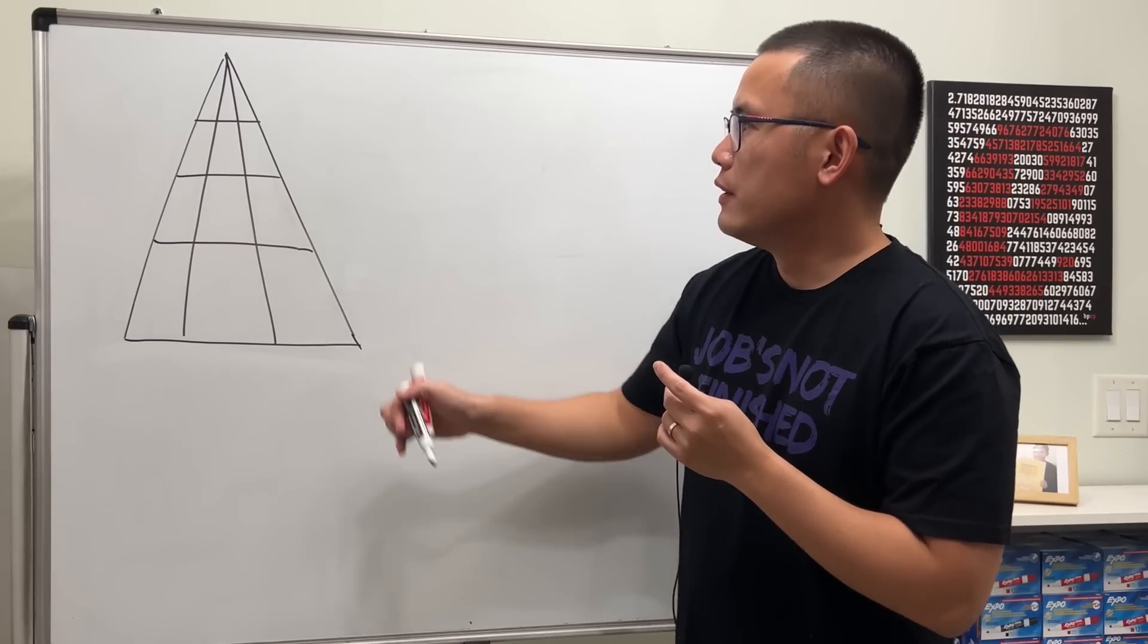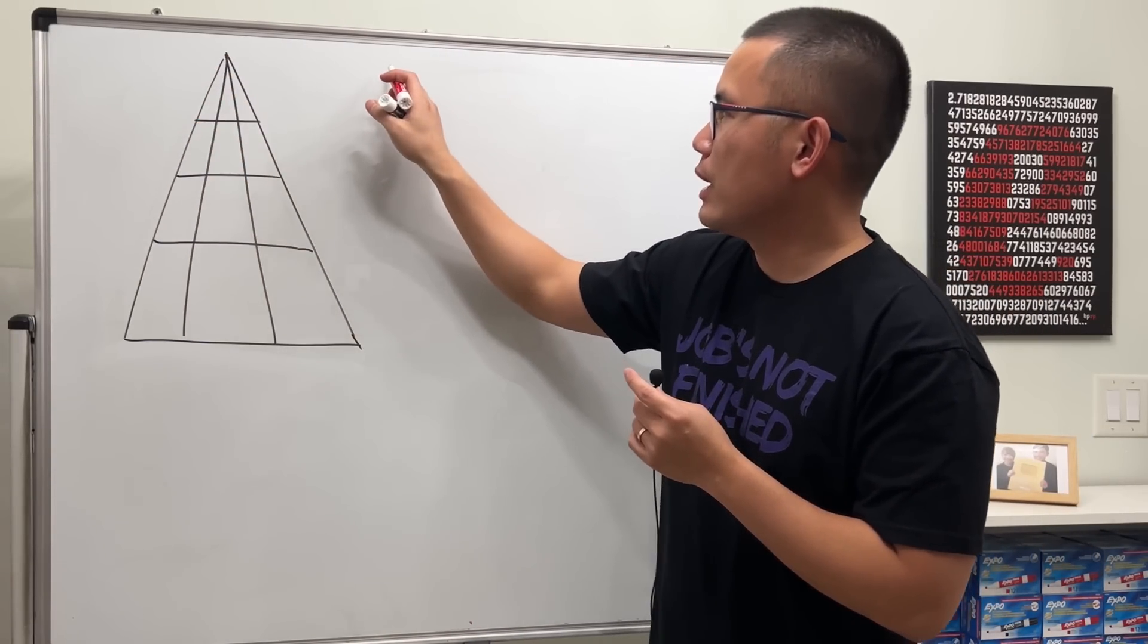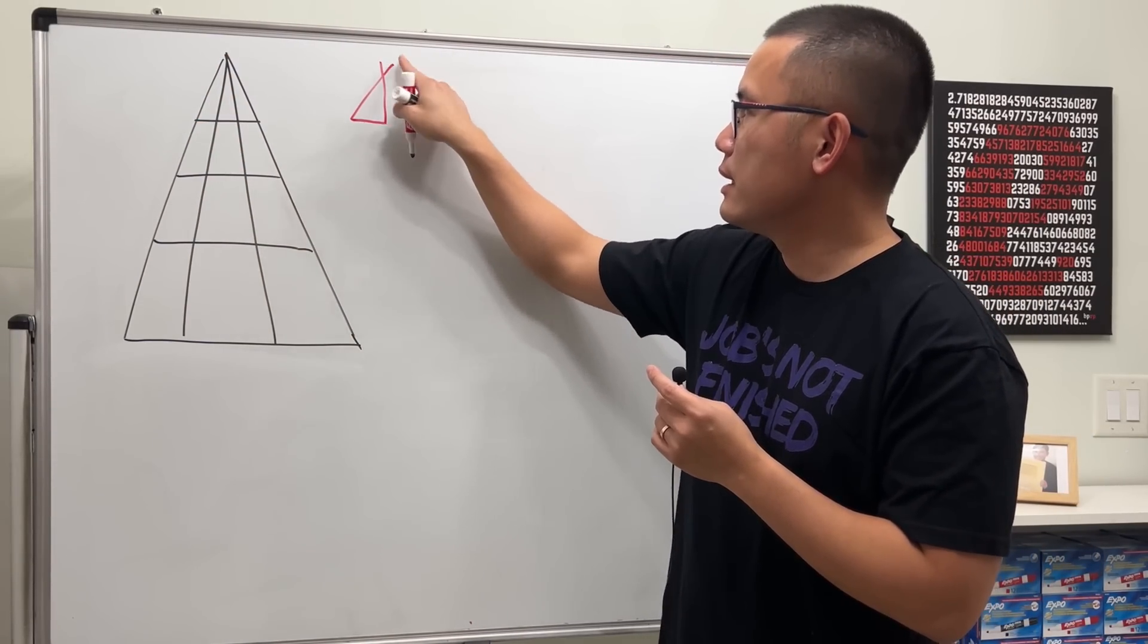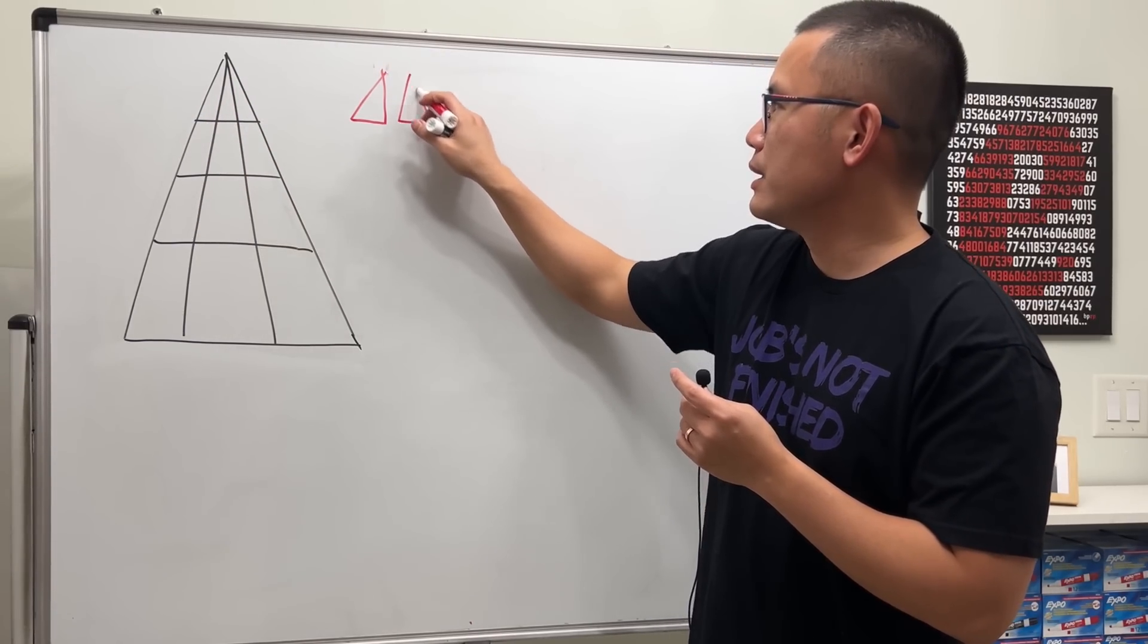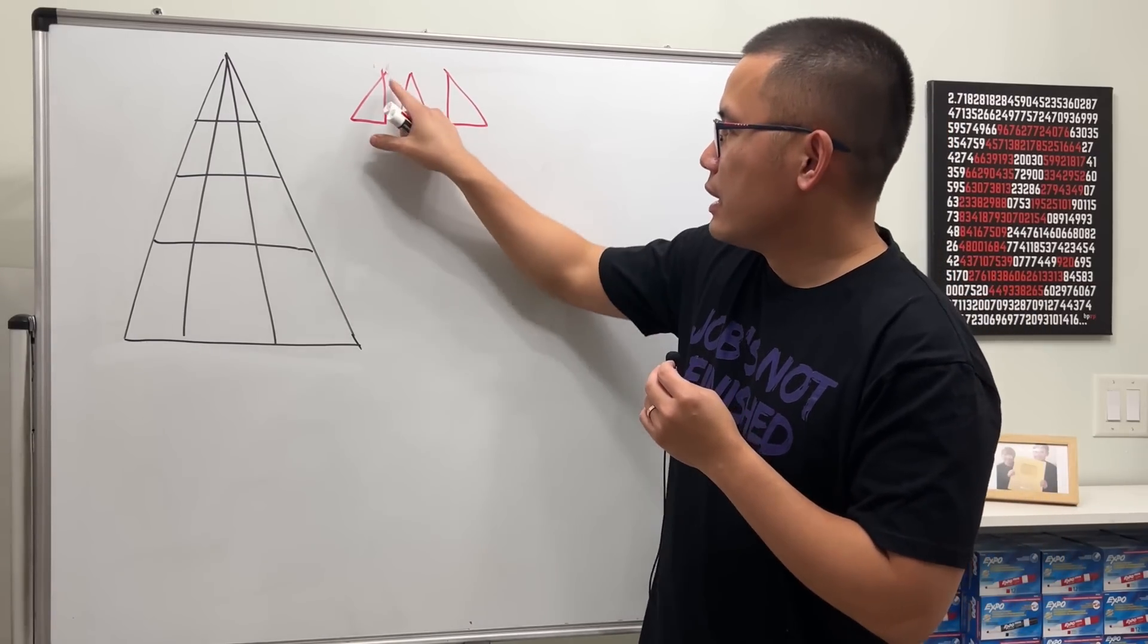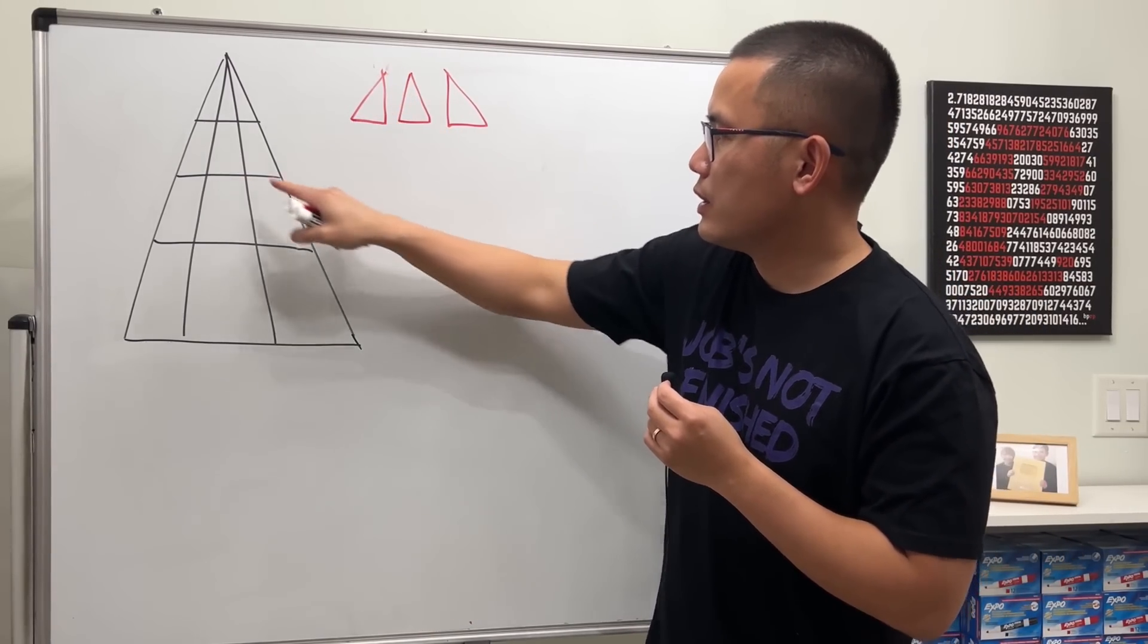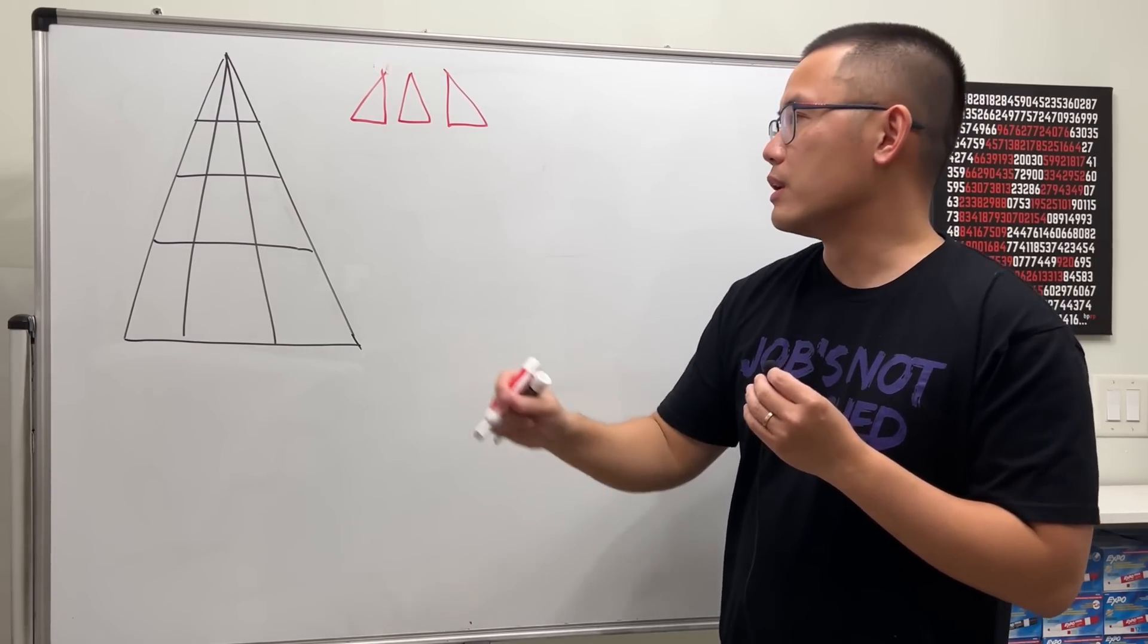Anyway, first we'll just count. This right here is a small triangle, I'll just draw it right here - this is one. This right here is another one, so two, and then another one is three. Now here's the deal: if you extend it from here to here, that's still another triangle, so you can make it longer.